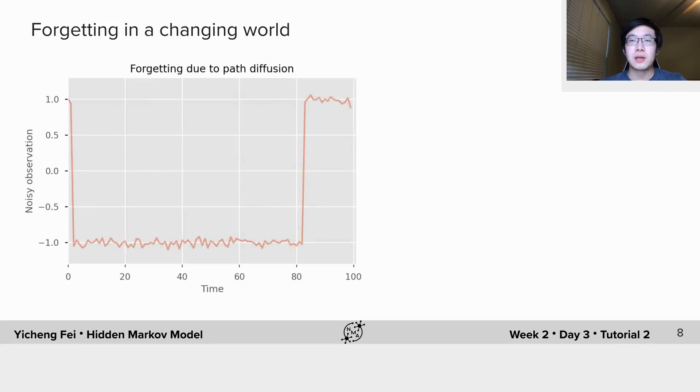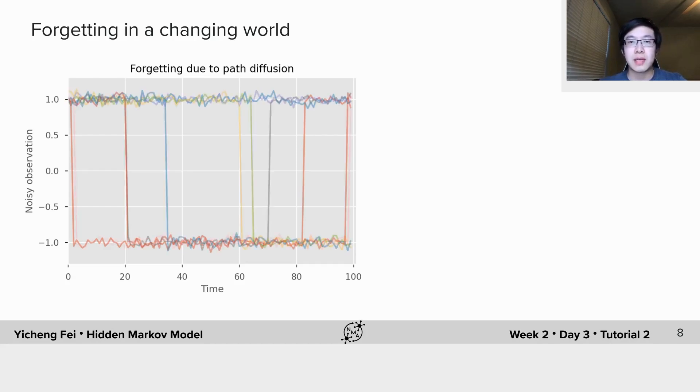To see this point, let's generate some random sequences from the Markov chain we just built in exercise 1. Here, assuming we are in state 0 in the beginning, and we have 1% chance to switch at each time step.